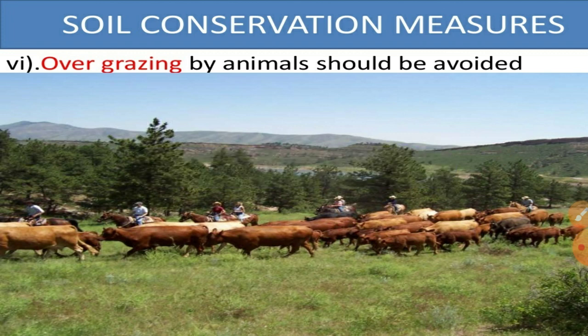In this way, there are different measures we need to adopt for soil conservation. By doing so, we can prevent soil erosion, improve the fertility of the soil, and meet the demands of the population. Soil is very essential for living beings and for all human survival. Thank you.